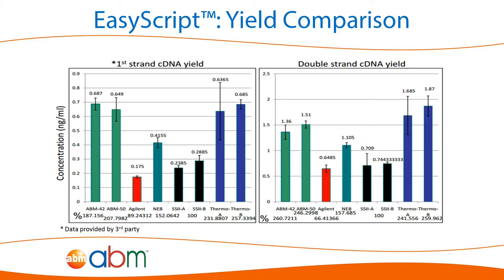For both first-strand and double-strand cDNA synthesis, ABM's EasyScript performs comparably, if not better, than NEB and Life Technologies, both of whom are the leading competitors on the market.